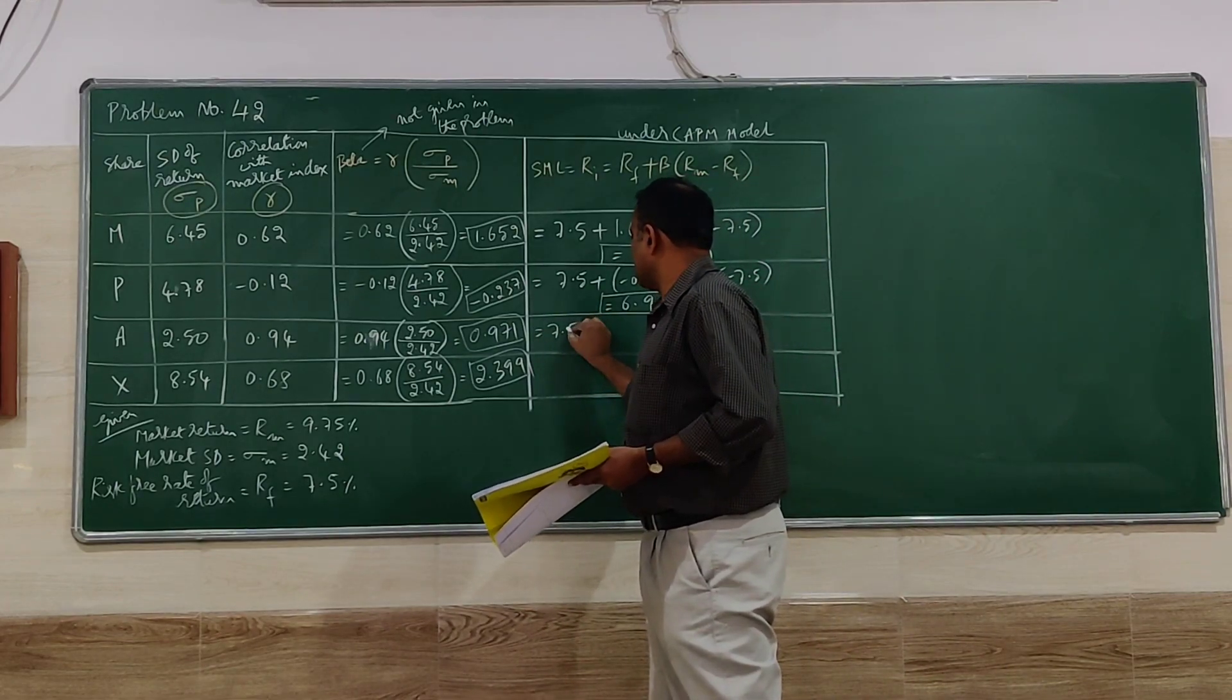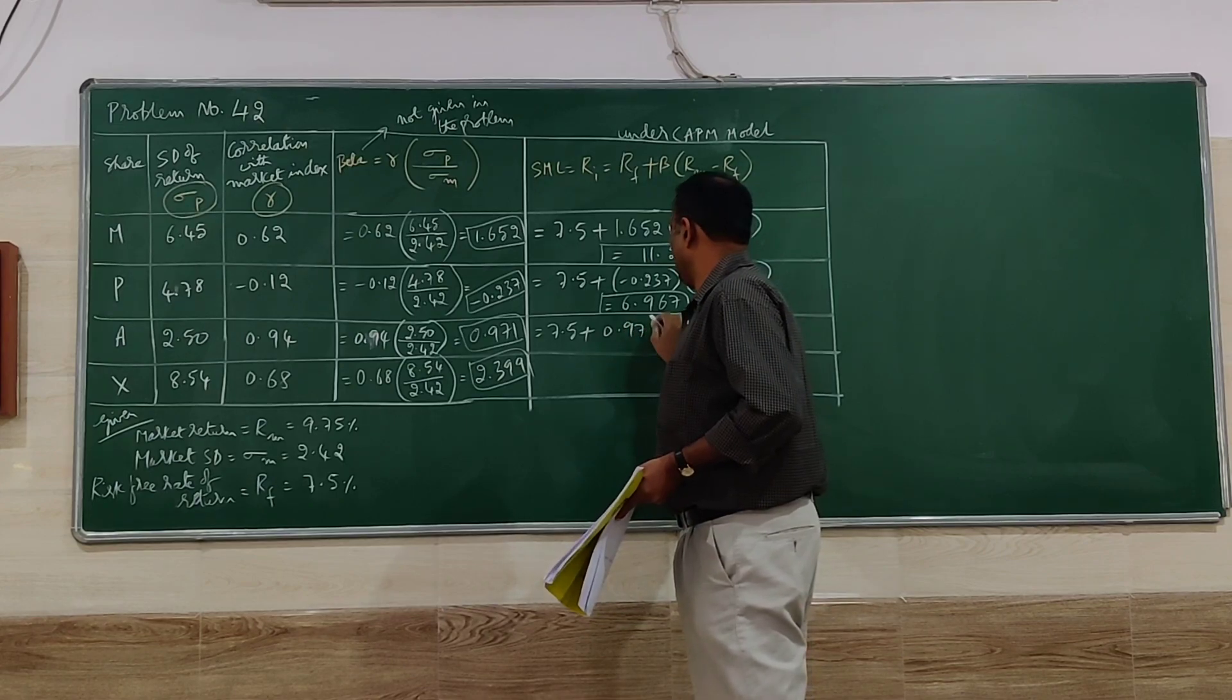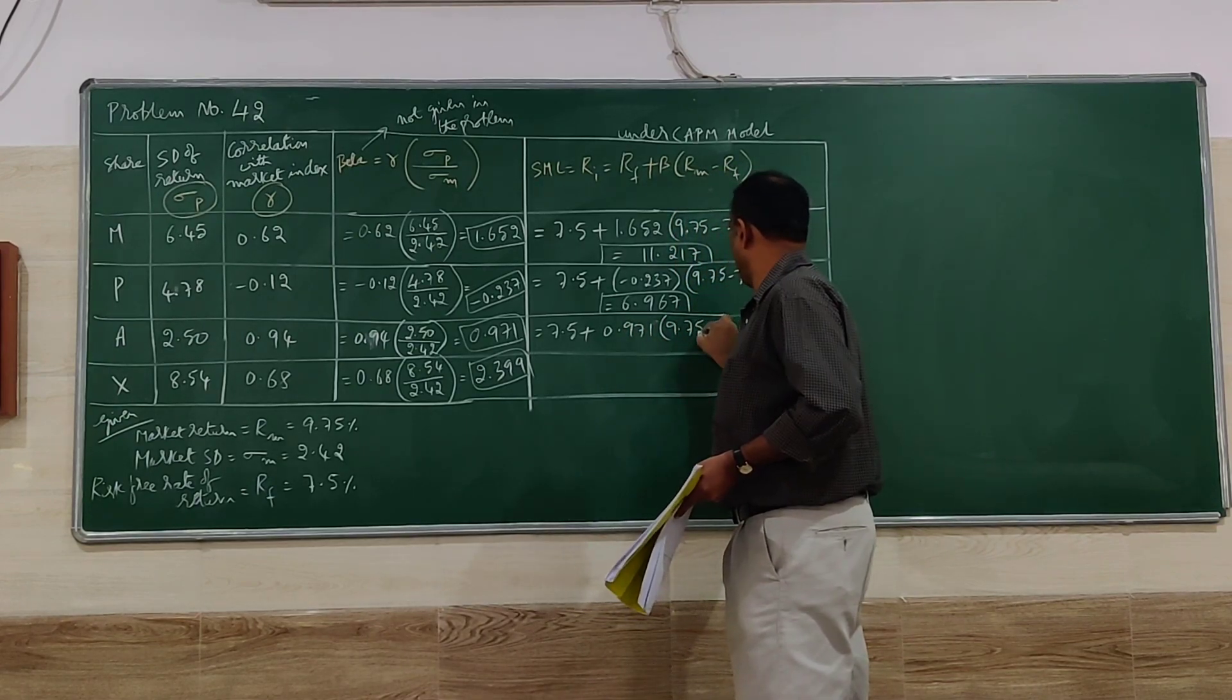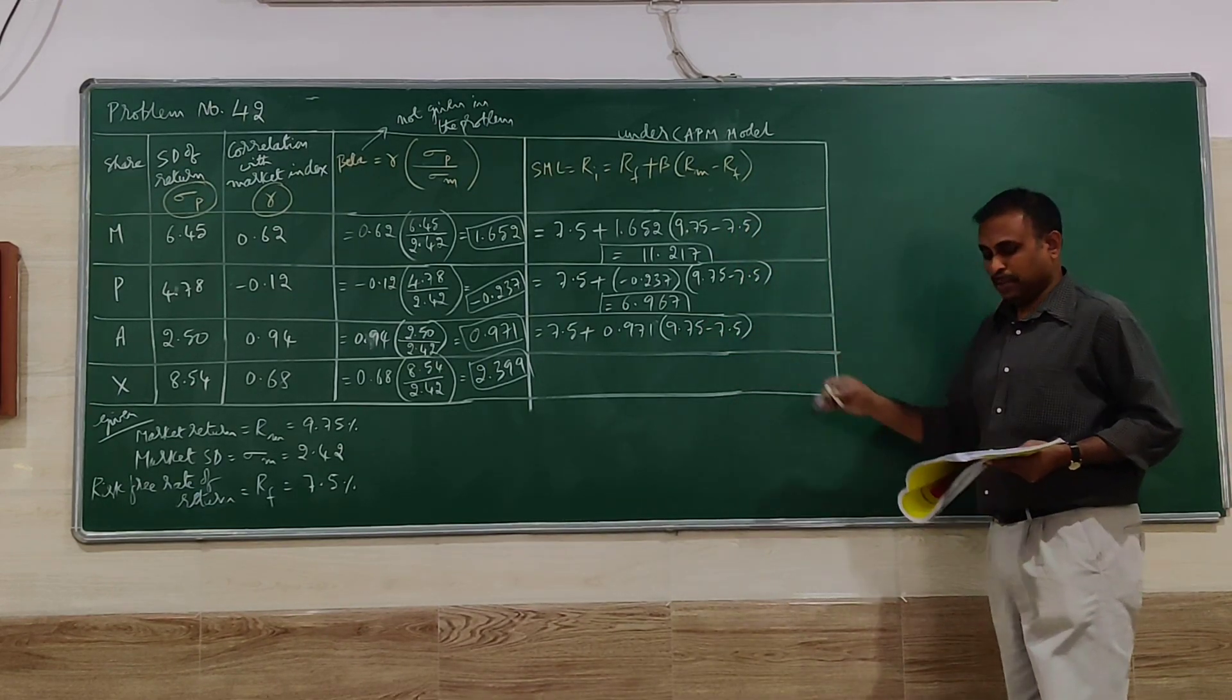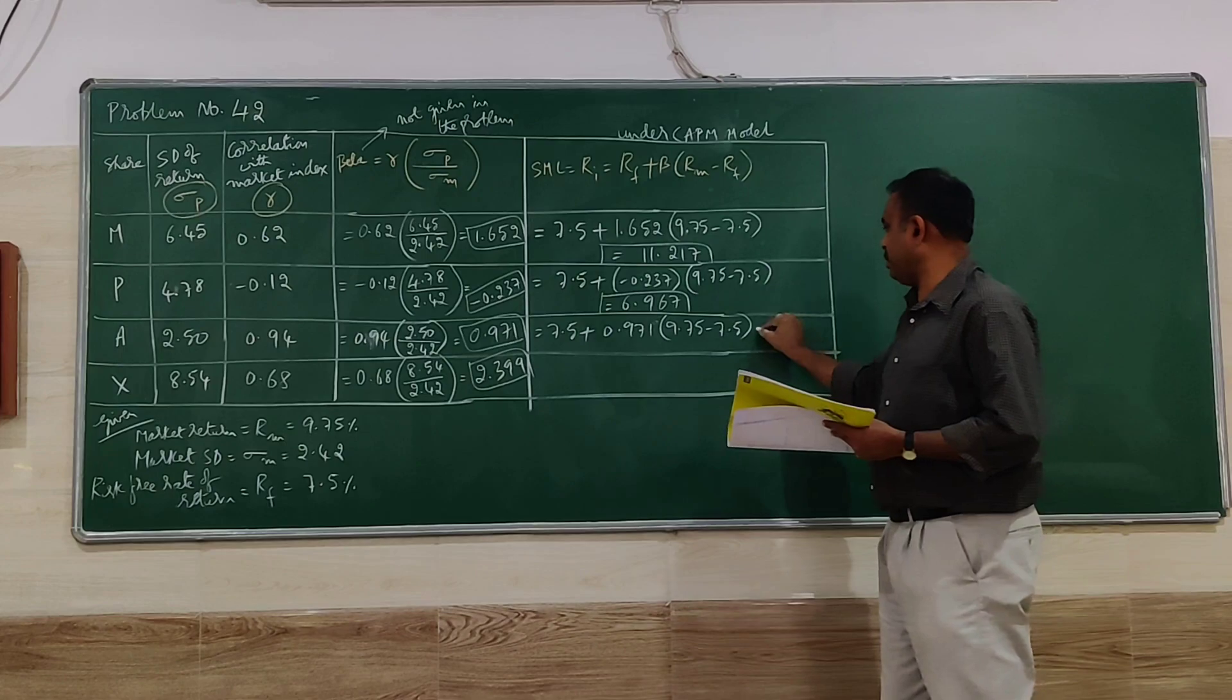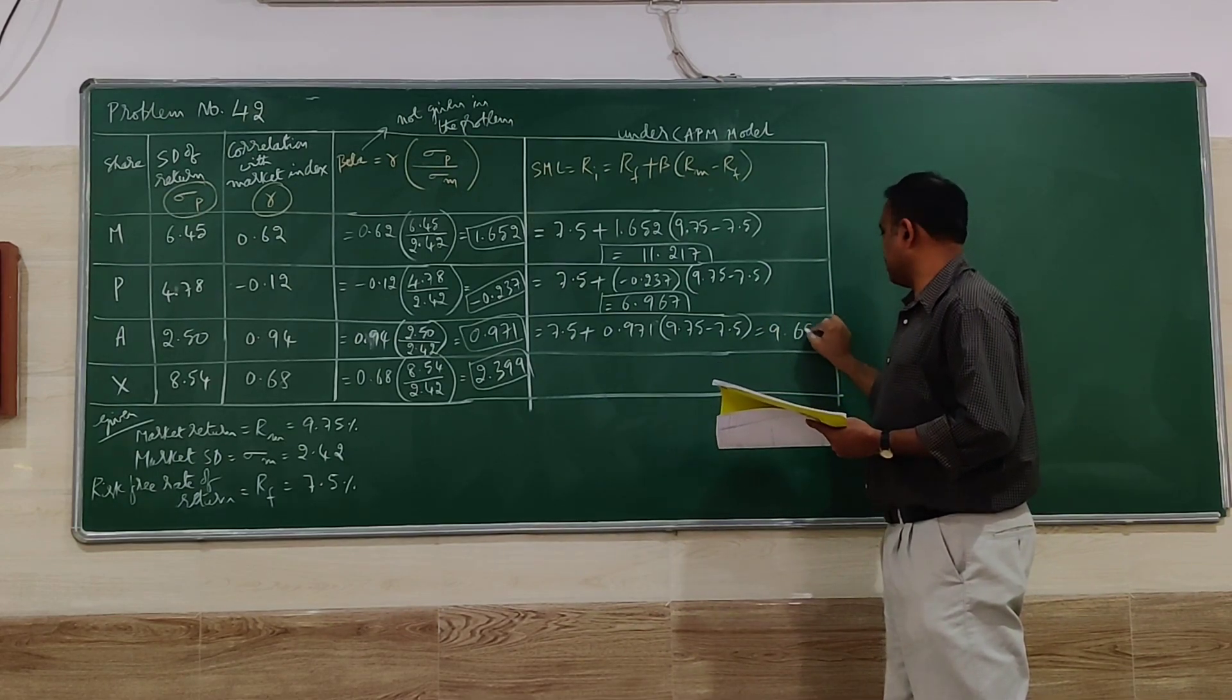Next one: 7.5 plus the beta value. When you simplify here, you are going to get 9.684.